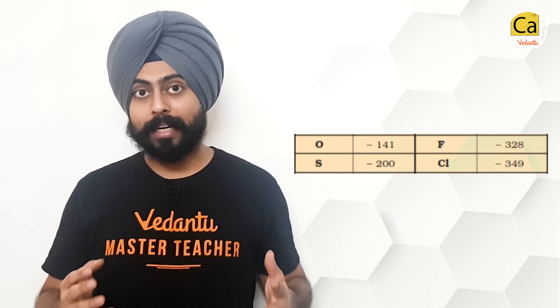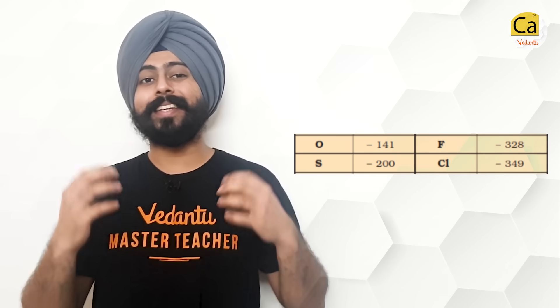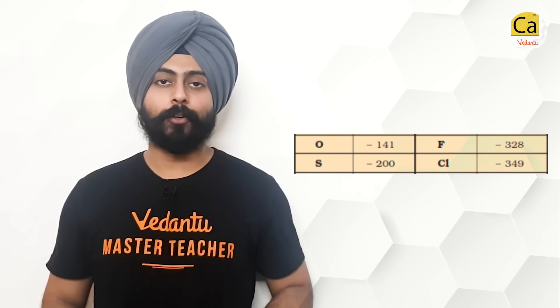For example, the electron gain enthalpy for chlorine is −350 kJ/mol. But if stated as electron affinity, chlorine has an affinity of +350 kJ/mol. Both statements mean that when one electron is given to chlorine, it releases that amount of energy overall. The notable exceptions are oxygen and fluorine, whose magnitude of energy released on gaining an electron is less than that of sulfur and chlorine.